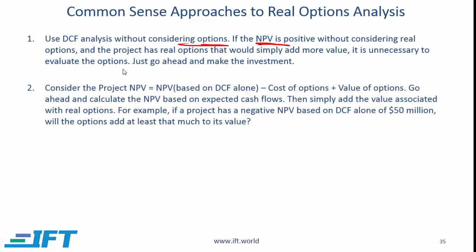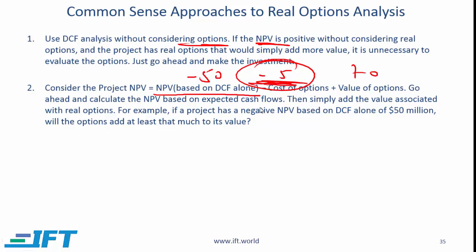What if the NPV without considering the option is negative? You look at the NPV based on discounted cash flow alone — say it is negative 50. But if the project has embedded options and you can pay a certain amount for one, say you pay five for an embedded option but the value of that option is 70, then by having that option the NPV increases by 70. It then makes sense to spend money on the option because the project becomes a positive NPV project.